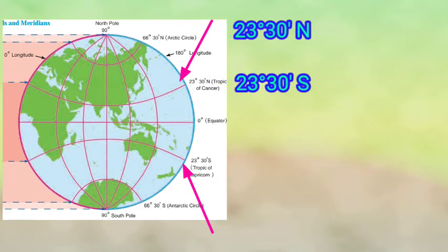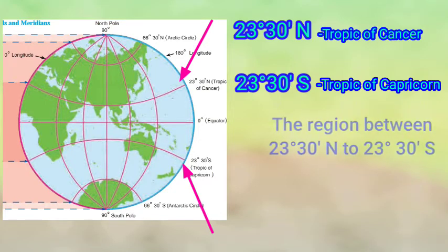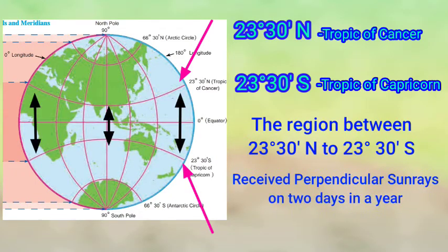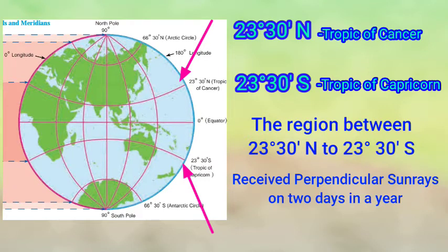Next: 23°30' North and 23°30' South, known as the Tropic of Cancer and Tropic of Capricorn respectively. The importance of these parallels is that the region between 23° North and 23° South receives perpendicular sun rays on two days in the year, while the region outside of 23°30' North to 23°30' South never receives perpendicular sunrays. That is why these are important parallels among the 181.